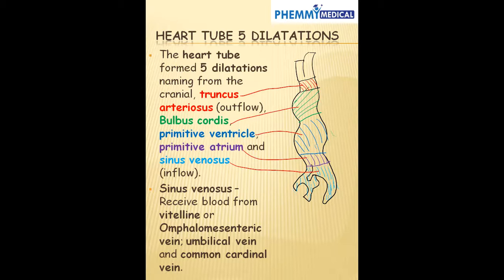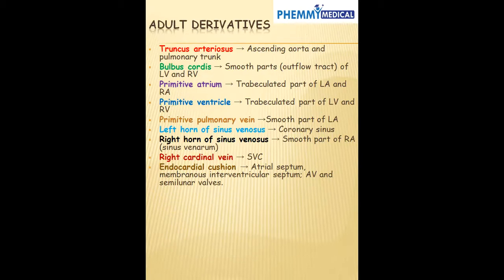The sinus venosus receives blood from the vitelline or omphalomesenteric veins, the umbilical veins, and the common cardinal veins.